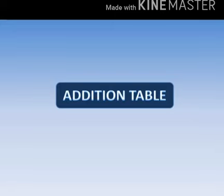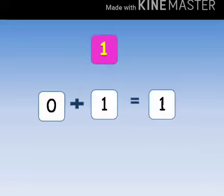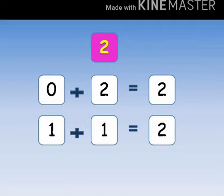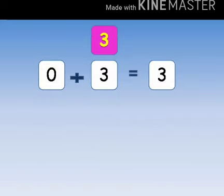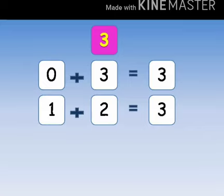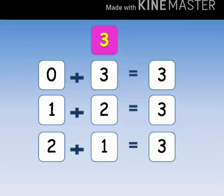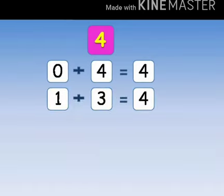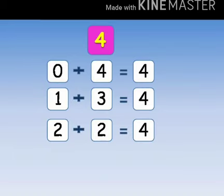Addition table. Table for 1: 0 plus 1 equals to 1. Table for 2: 0 plus 2 equals to 2, 1 plus 1 equals to 2. Table for 3: 0 plus 3 equals to 3, 1 plus 2 equals to 3, 2 plus 1 equals to 3. Table for 4: 0 plus 4 equals to 4, 1 plus 3 equals to 4, 2 plus 2 equals to 4.